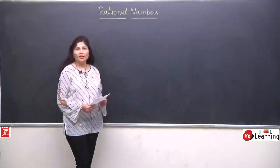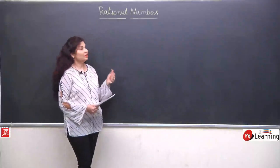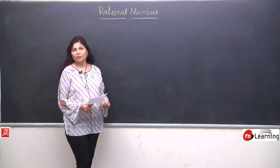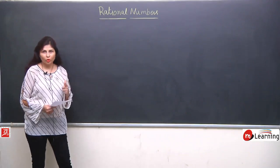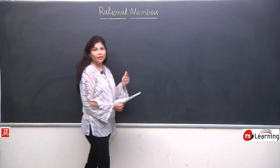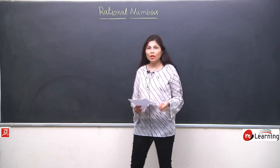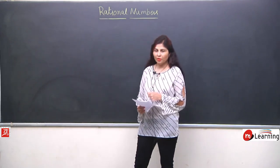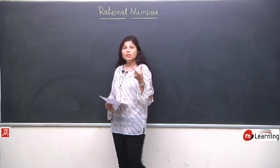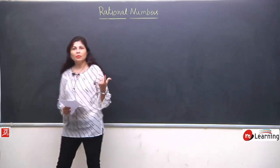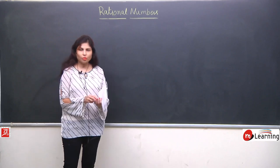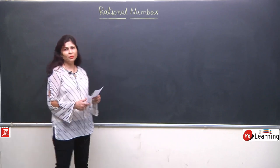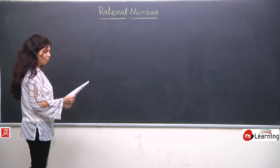Hi students, we are learning the chapter on rational numbers and we are solving some questions based on commutative property and associative property. Yesterday I solved one question which had different denominators. So today we'll see what happens when we have different denominators or some same and some different, so that you will be more comfortable with these topics.